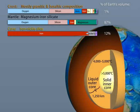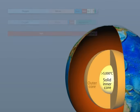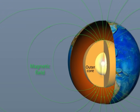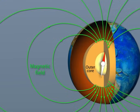Although the inner core is hotter than the outer core, there's also greater pressure squeezing the atoms, changing the material from liquid to solid. The liquid outer core is convecting vigorously and generates Earth's magnetic field.